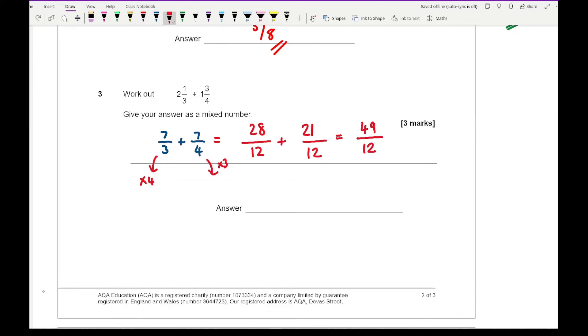I need to do 12 divided into 49. How many 12s go into 49? That's 4, which gives 48. The remainder from 48 to 49 is 1, so it's 4 and 1/12.